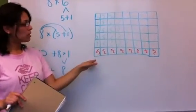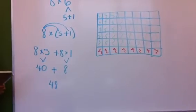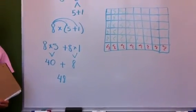8 columns, 6 in each column, and your product is 48. And that is the distributive property.